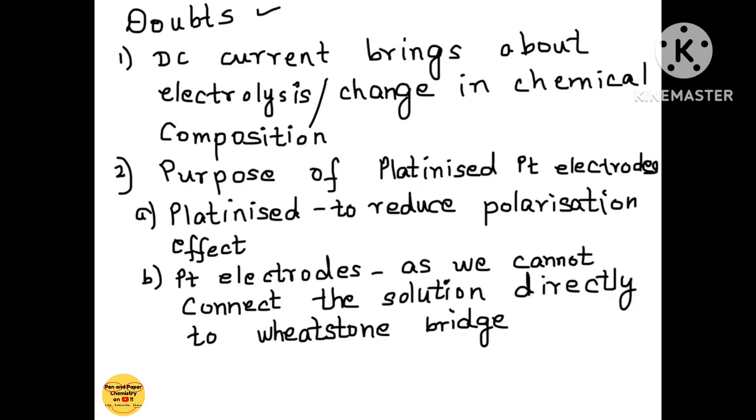So here I have listed the two important points to be considered when talking about the conductivity cell. First, why are we using an AC current? Because the DC current will bring about electrolysis or a change in the chemical composition of the electrolyte. Why are we using platinized platinum electrodes? Platinized to reduce the polarization effect and we need the platinum electrodes so that they serve as a connecting link between the solution and the wires of the Wheatstone bridge. I hope you have noted them down.